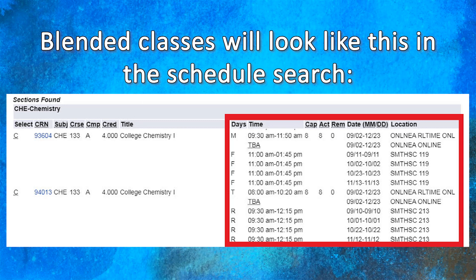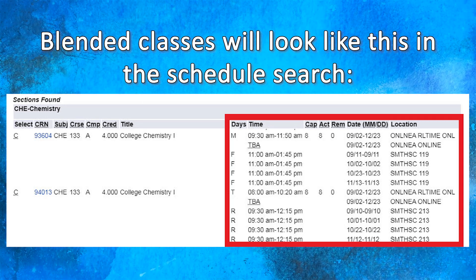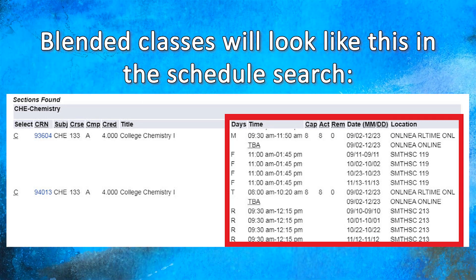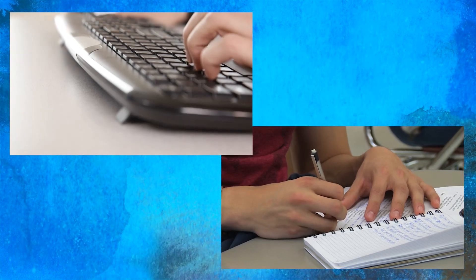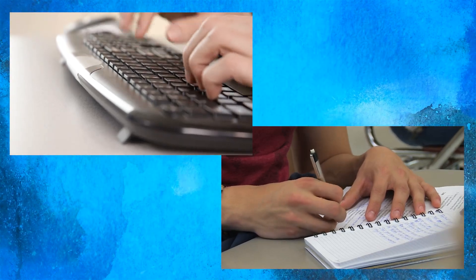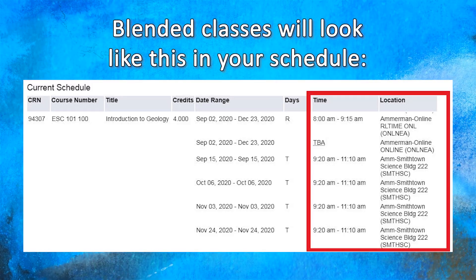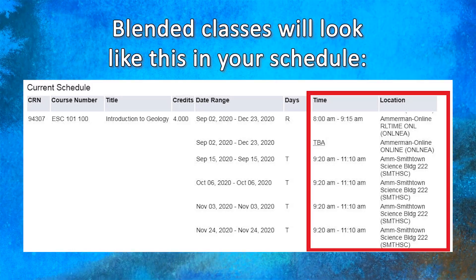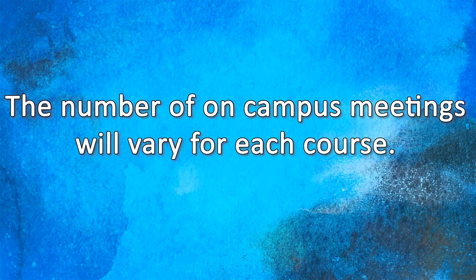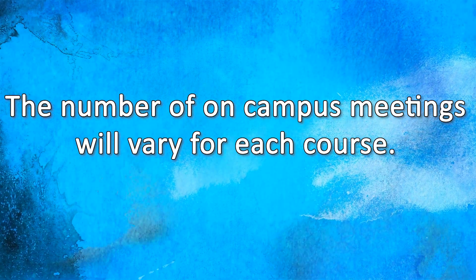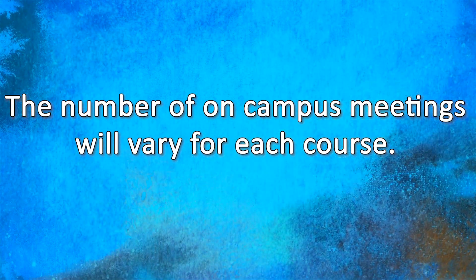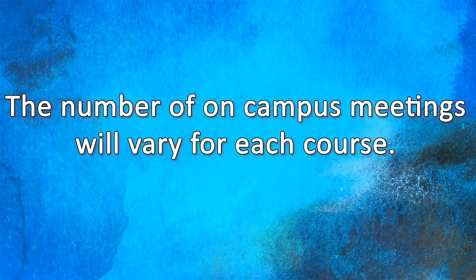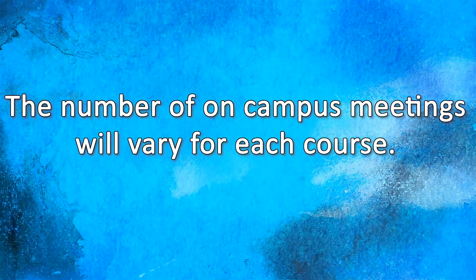If a class is designated as blended, the class search may look something like this. In blended classes, some of the instruction will take place in the online or real-time online modality, and some instruction will take place in person on campus. The number of on-campus meetings will vary for each course. Your schedule will show the actual class meeting dates and times that you will need to be on campus.